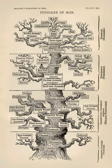The Hershey-Chase experiment in 1952 confirmed that DNA rather than protein is the genetic material of the viruses that infect bacteria, providing further evidence that DNA is the molecule responsible for inheritance. James Watson and Francis Crick determined the structure of DNA in 1953, using the X-ray crystallography work of Rosalind Franklin and Maurice Wilkins, which indicated DNA has a helical structure. Their double helix model had two strands of DNA with the nucleotides pointing inward, each matching a complementary nucleotide on the other strand to form what look like rungs on a twisted ladder.